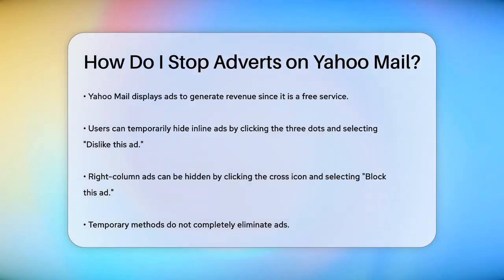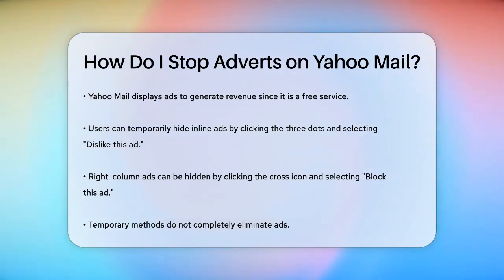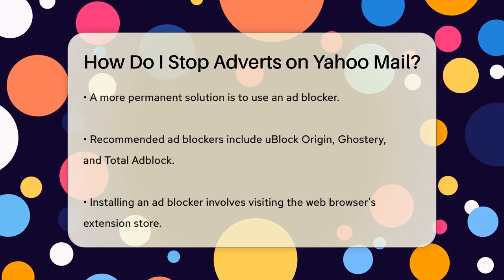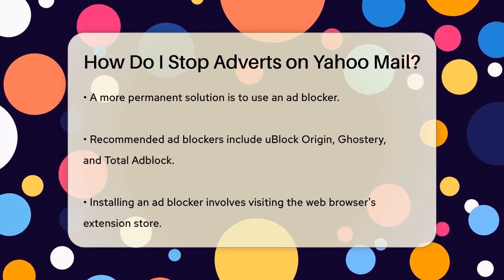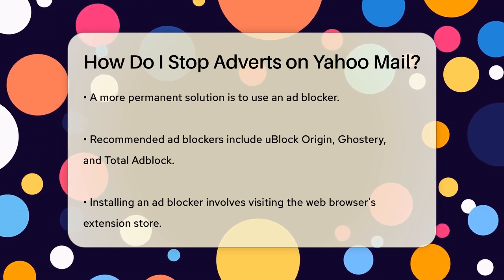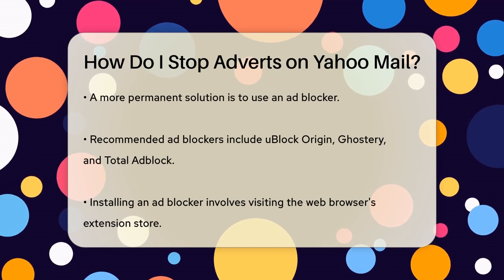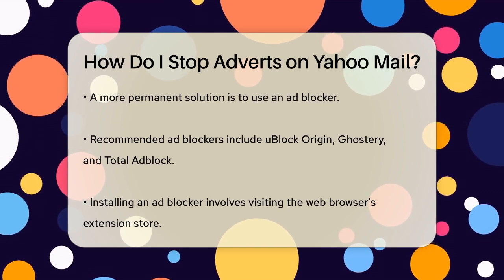However, there are several ways to block or hide these ads. If you're using the desktop version of Yahoo Mail, you can temporarily hide some types of ads. For example, those inline ads that look like regular emails can be hidden by clicking the three horizontal dots on the right side of the ad and selecting 'Dislike this ad'. Similarly, you can hide right column ads by clicking the cross icon in the top right corner of the ad and then selecting 'Block this ad' with a reason. However, these methods are temporary and won't completely eliminate the ads.